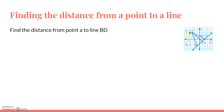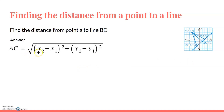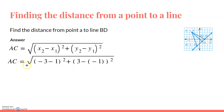Alright, so now let's go back. We can find the answer to this by calculating the distance of segment AC, or the length of AC. As we learned, the segment from the point to the line will be the distance, so from point A to point C, that's the distance. So we can use our distance formula. AC is equal to the square root of (x2 minus x1) squared plus (y2 minus y1) squared. Let's plug in our values: AC is equal to the square root of (negative 3 minus 1) squared plus (3 minus negative 1) squared.